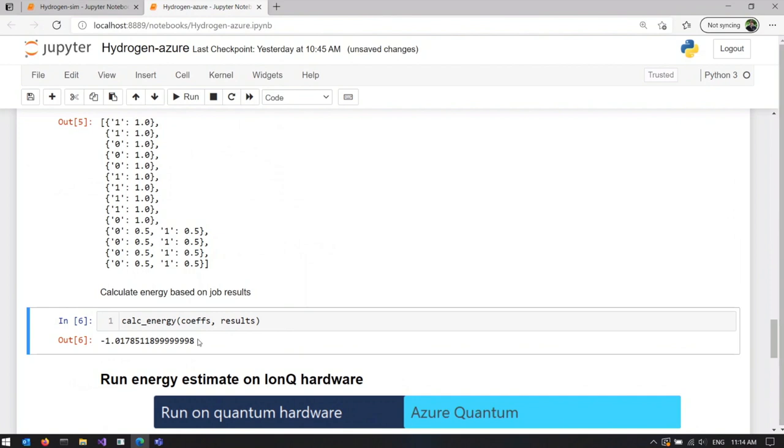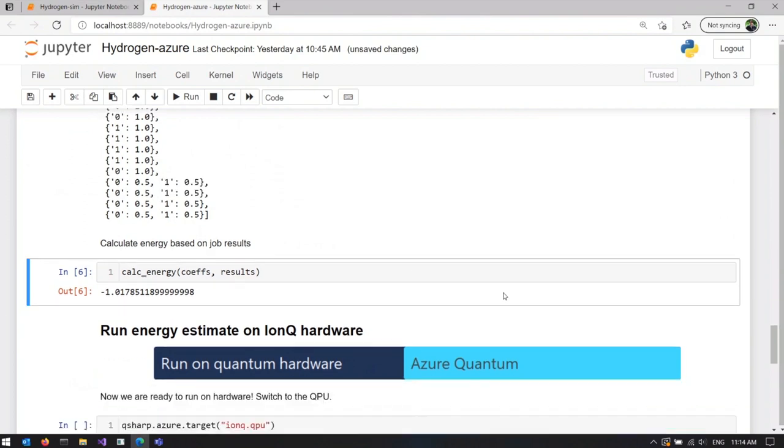Now the only step that is left is aggregating these results into one number using the Python function we defined earlier. You see that this number is slightly off from the one we got in the exact simulation, because we are estimating the energy of a different state, not the ground state, but the one that is very close to it.